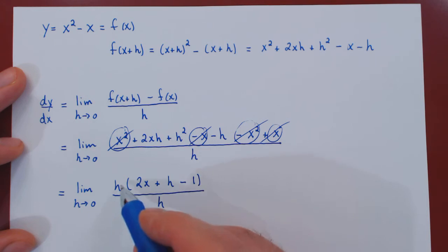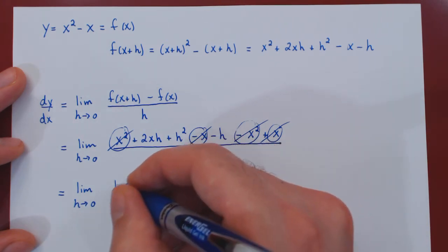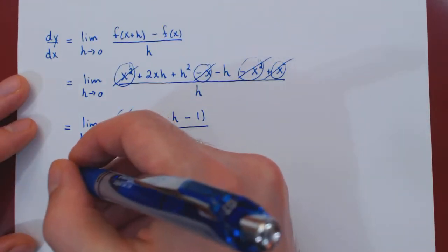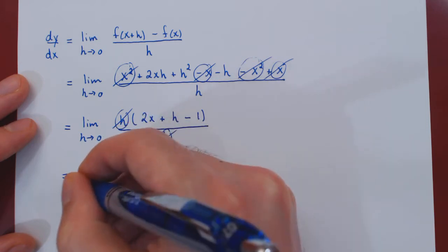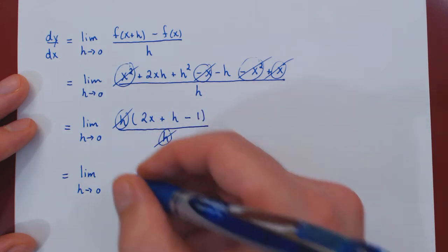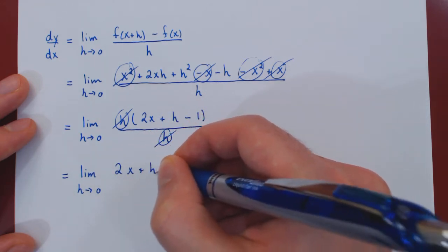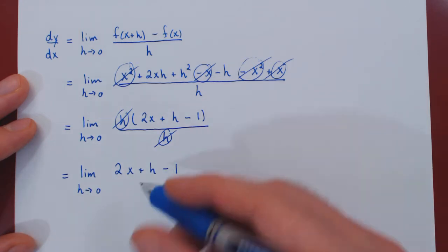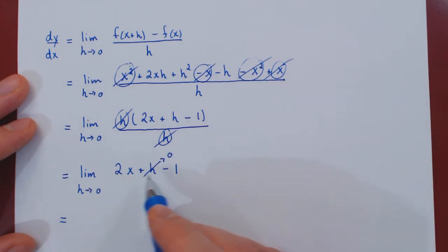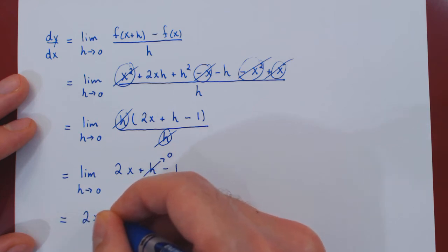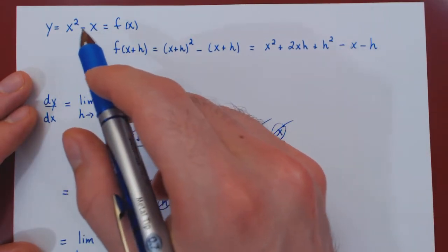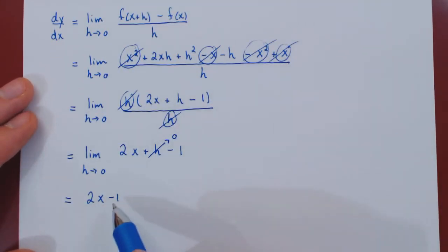Now we have a proper factor of h on top and on the bottom of our fraction, so it naturally cancels out. We're left with a very simple limit: the single expression 2x plus h minus 1. As we let h shrink to 0, that term shrinks to 0, and we're left quite simply with 2x minus 1. So the derivative of the original function x squared minus x is 2x minus 1.